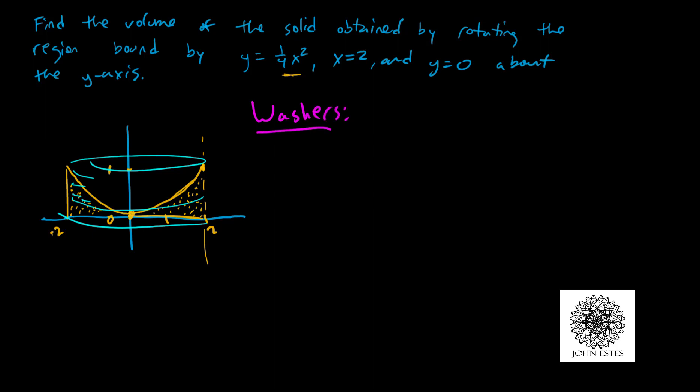The first method is washers. For the washers method, I take a horizontal slice across the curve. When you pull that slice out and look at it, it's a circle — because we revolved the curve around the axis. We add up the area of these little rings from the bottom all the way up, calculating the volume of each one. They have a thin width, which is why we call it the washers method.